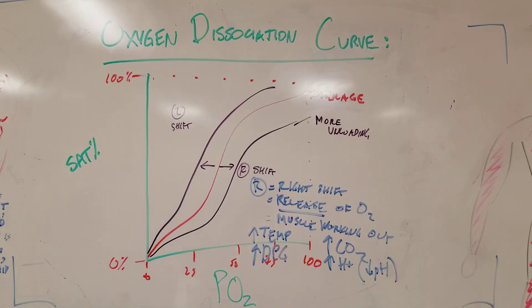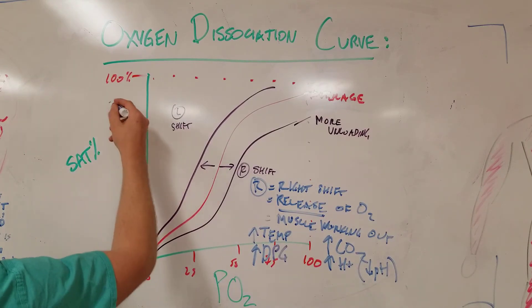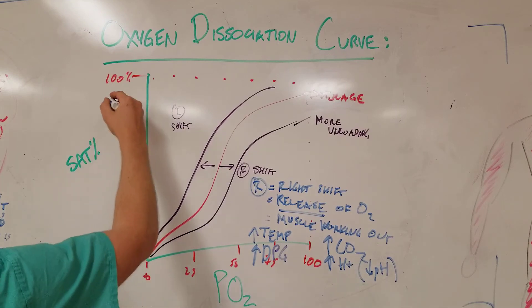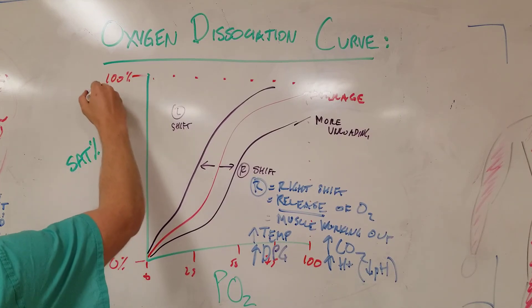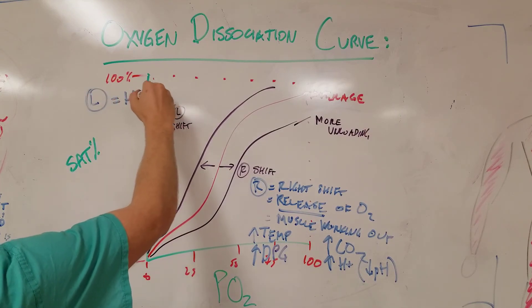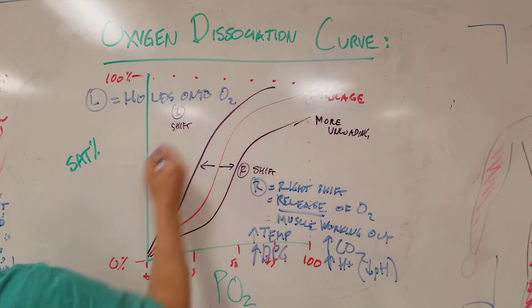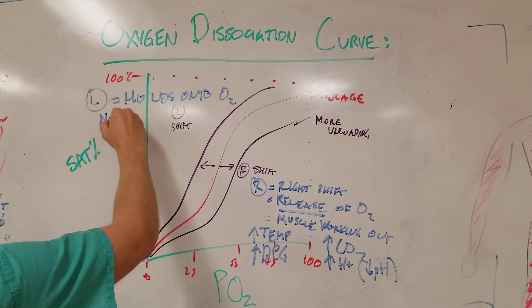The left shift is exactly the opposite. So the left shift means, for whatever reason, the hemoglobin is passing through the bloodstream at this end organ or what have you. And it wants to hold on to the product, holds on to the O2. And what could that see? That could see a muscle that's quiet or not working out.